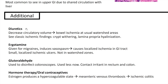Some additional things: for diuretics, decreased circulatory volume leads to bowel ischemia at usual watershed areas, with classic ischemic findings like crypt withering and lamina propria hyalinization. For ergotamine, which is given for migraines, this induces vasospasm, which can also lead to localized ischemia in the GI tract — small, localized ischemic ulcers, not in watershed zones. Glutaraldehyde is used to disinfect colonoscopes and is a contact irritant in the rectum and colon. Hormonal therapies like oral contraceptives with estrogen produce a hypercoagulable state, which can lead to mesenteric venous thrombosis and ischemic colitis.